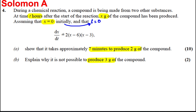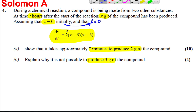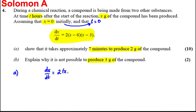So what this equation is telling you — here's a differential equation, and what we're going to do is solve it. It's saying the rate at which the grams of the compound is being made is equal to 2 times X minus 6, X minus 3. We can try and solve this differential equation to find X, how much compound, in terms of T. So for part A, let's go about solving. We have DX/DT equals 2(X − 6)(X − 3).